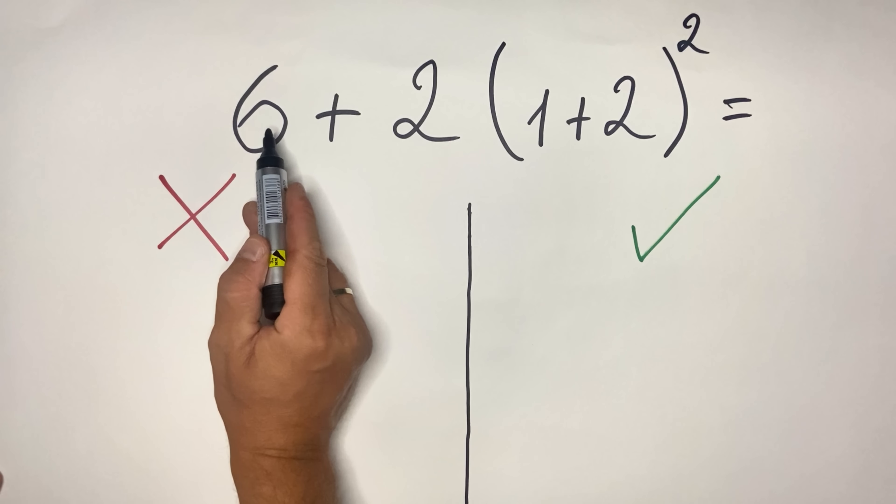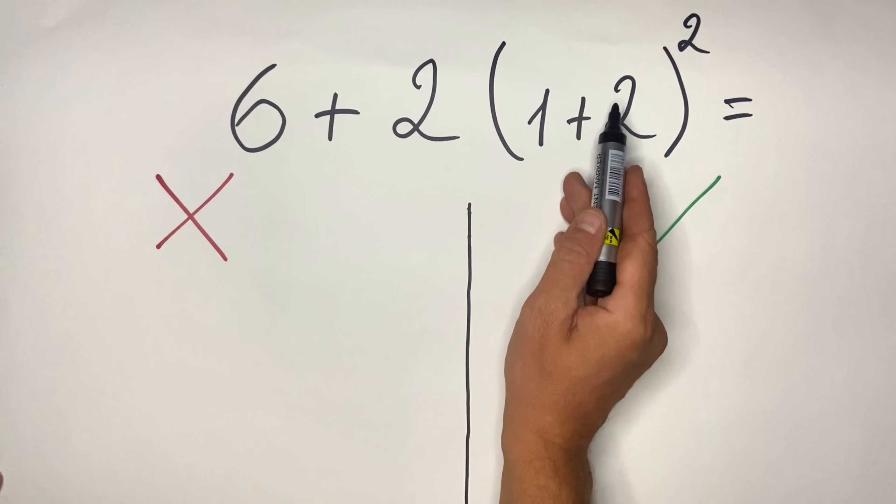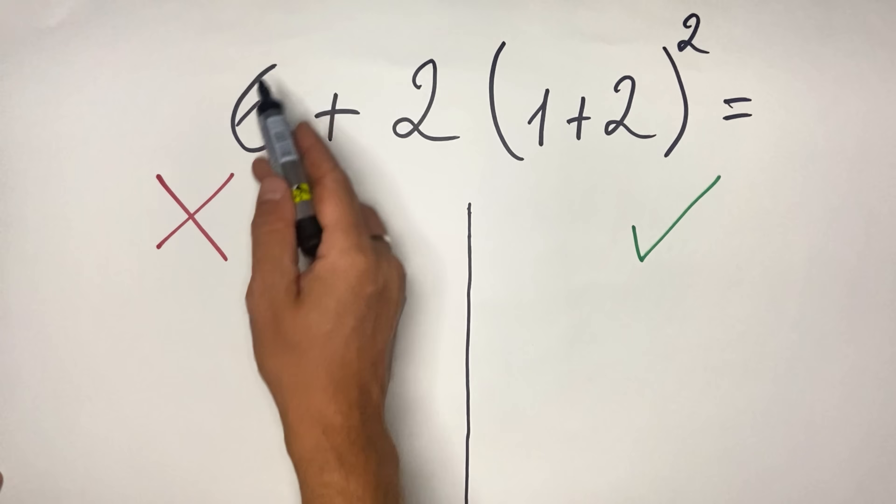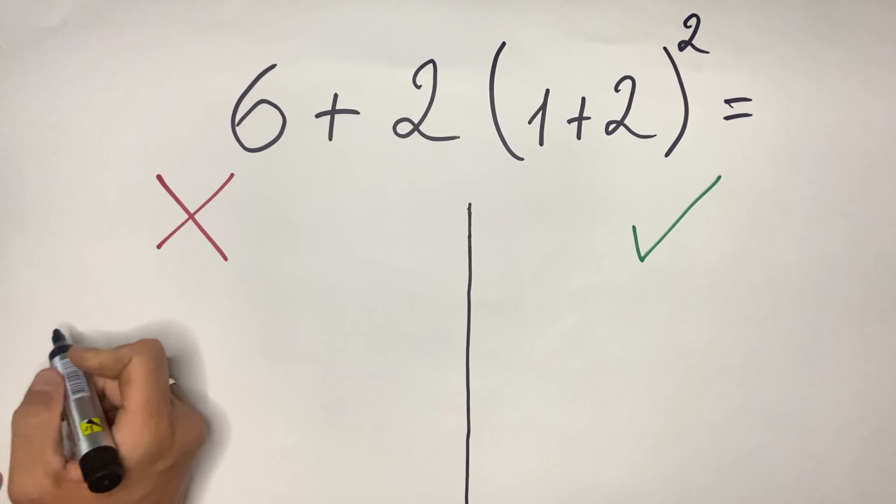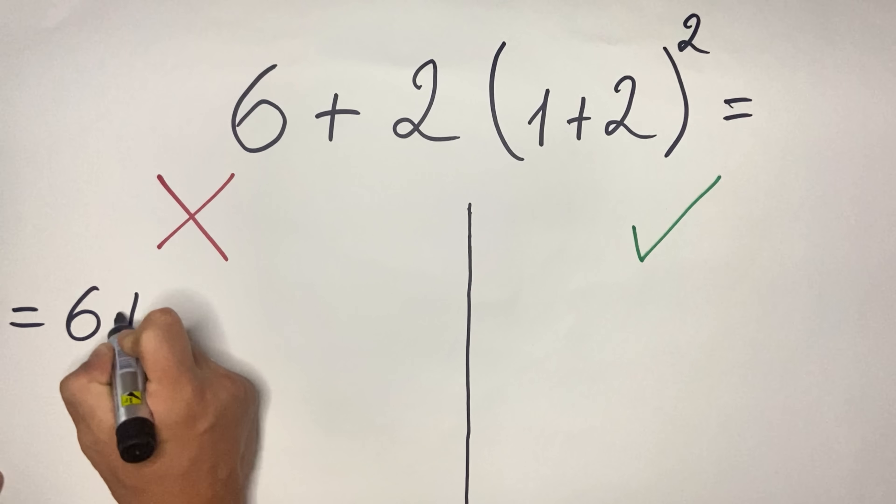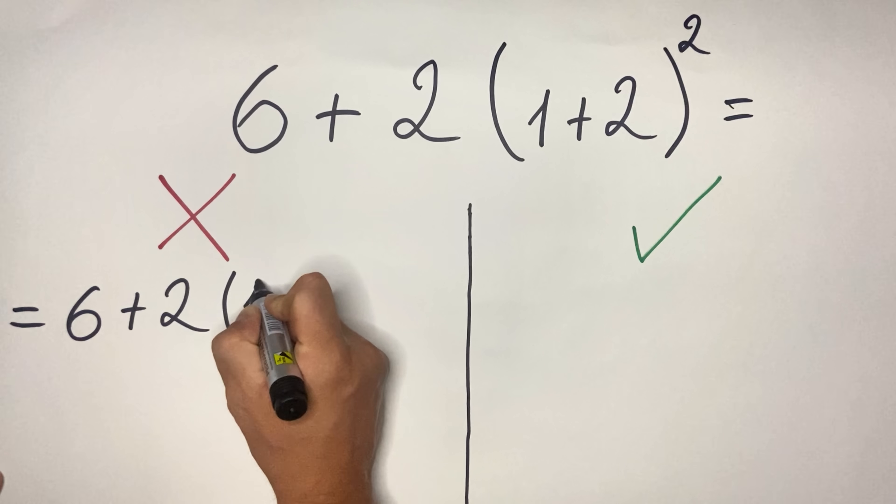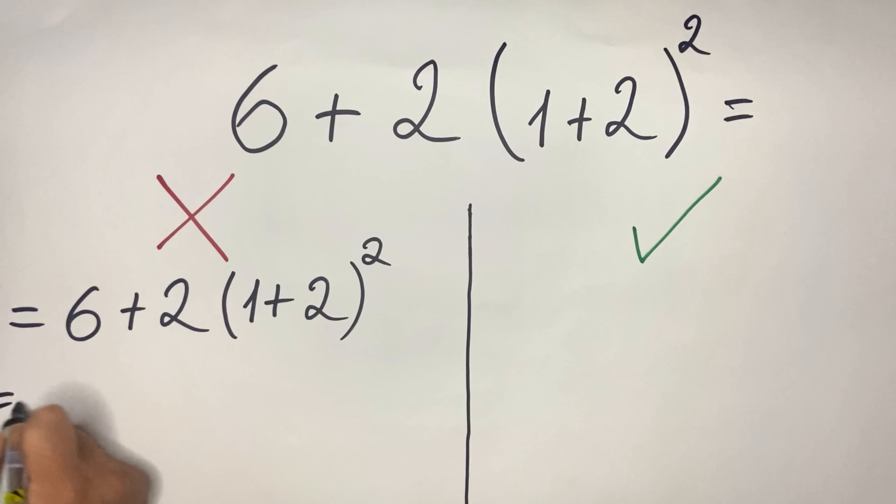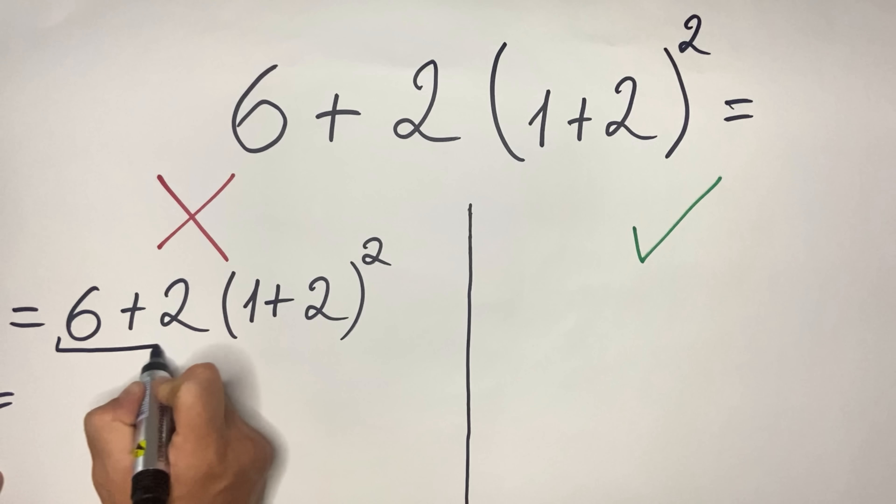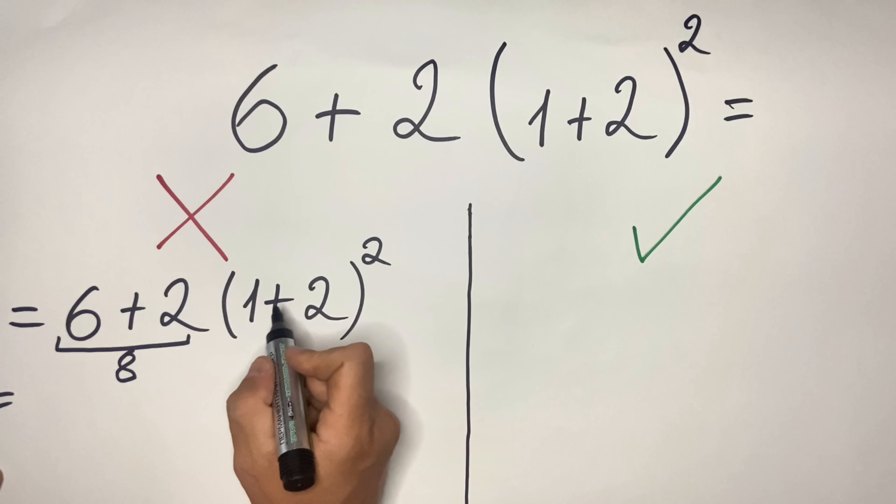...is they do the addition 6 + 2, and then they multiply what they got here to what they got on the right side. So for example, 6 + 2(1+2)², what they do is they first do the adding here, so 6 + 2 they get 8...